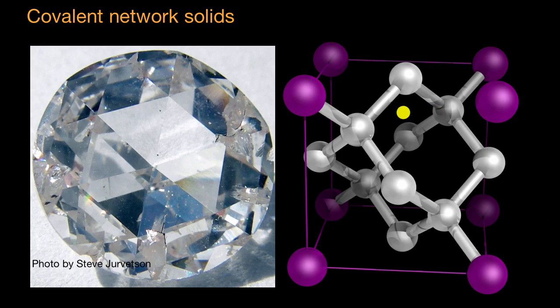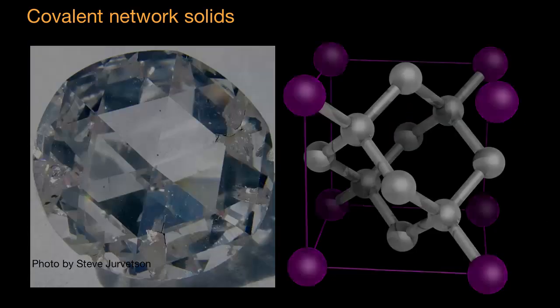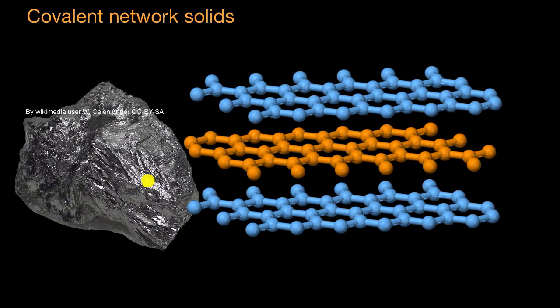What's interesting is that the same carbon can form different types of covalent network solids. For example, this right here is graphite. Graphite is probably something you're quite familiar with. When you write with a pencil, you're essentially scraping graphite onto that piece of paper. This is what graphite looks like—these covalent network sheets.